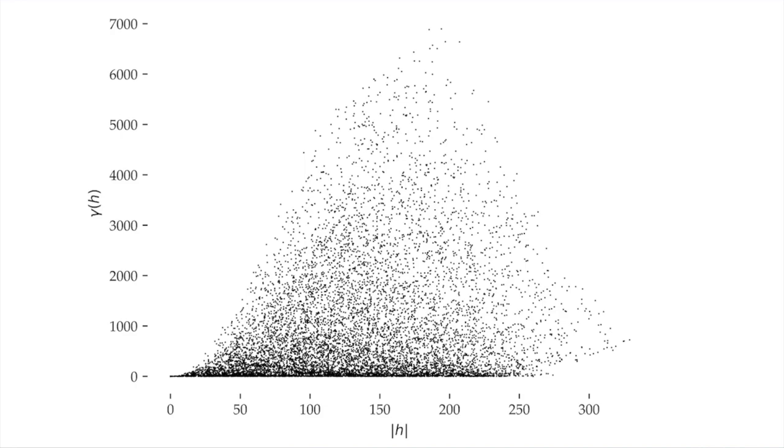Here, we can already see some typical characteristics of a variogram cloud. Since nearby sample points tend to have similar values, the dissimilarity tends to increase as the distance between sample points increases. However, the pattern in the variogram cloud is still not very clear.